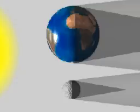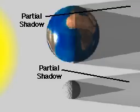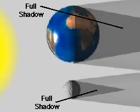Eclipses occur due to the movement of the shadows of the moon and earth. Each shadow consists of two zones: one from which part of the sunlight is blocked, and one from which all the sunlight is blocked.